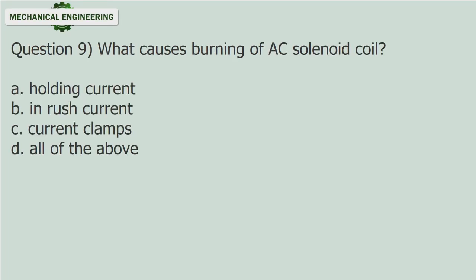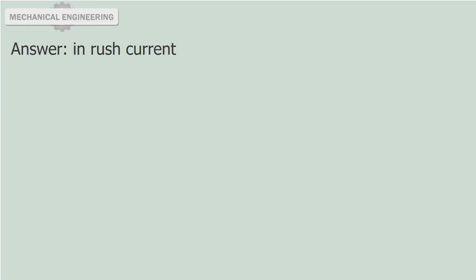Question 9: What causes burning of an AC solenoid coil? A. Holding current. B. Inrush current. C. Current clamps. D. All of the above. Answer: Inrush current.